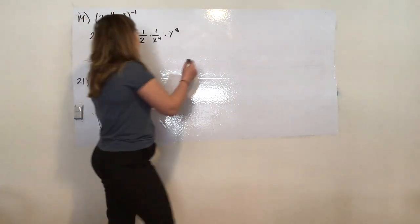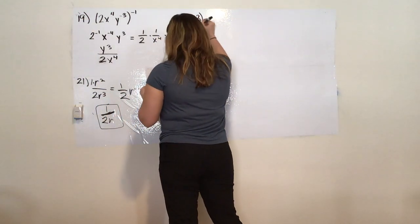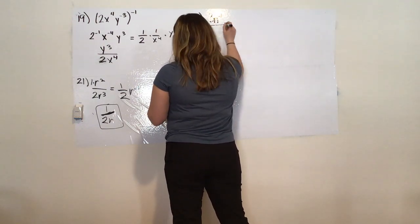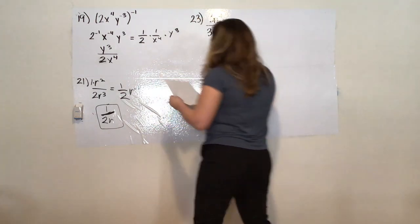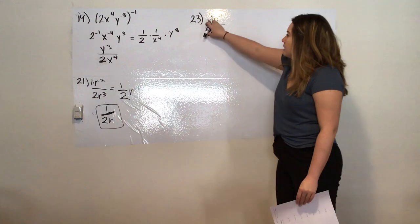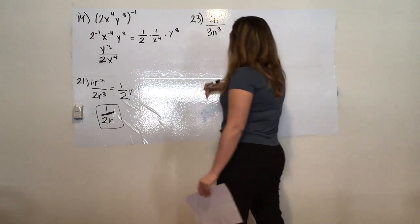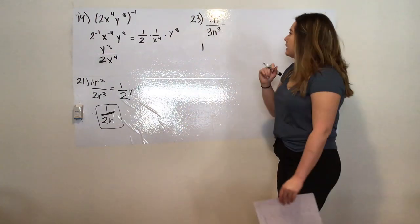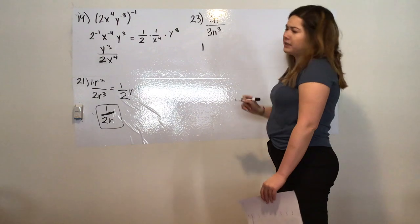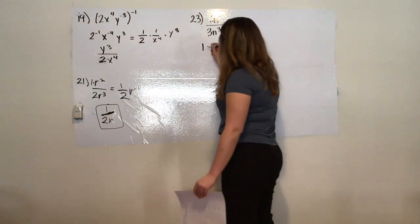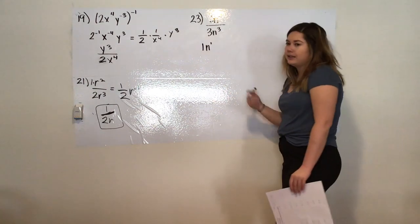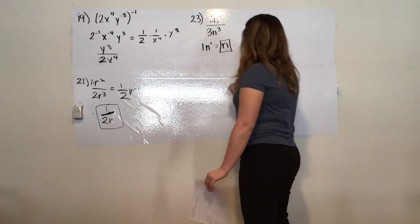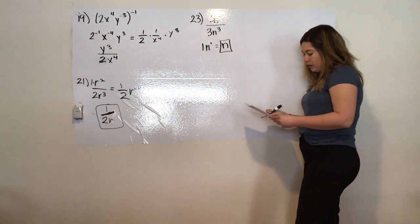Moving on to 23. So 23 is 3n to the power of 4 all over 3n cubed. Same thing, I'm going to treat the numbers as such, the division. So 3 over 3 becomes 1, so I'm just going to write that so we can keep track. And now I'm going to subtract my powers because it's the quotient rule, so now I just get n to the power of 1. And 1 has that magic property, so this is really just n.